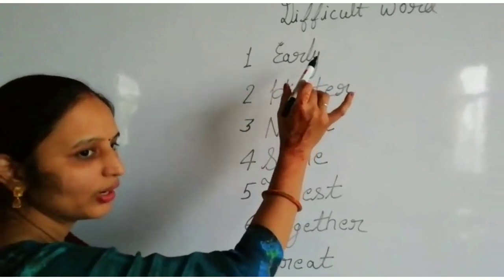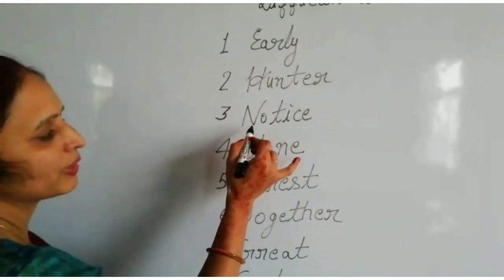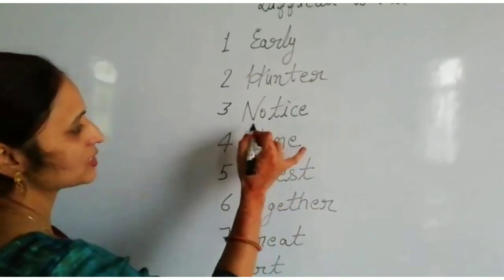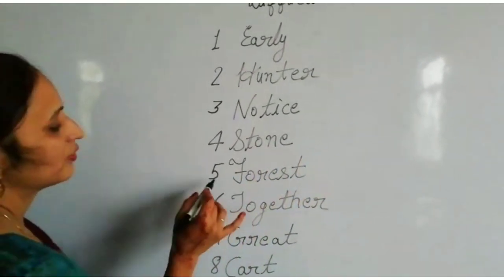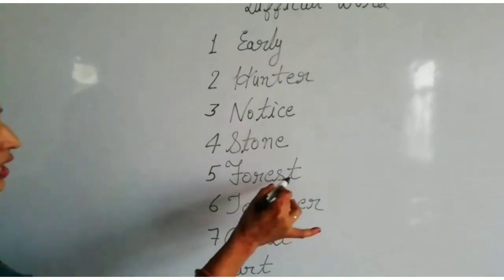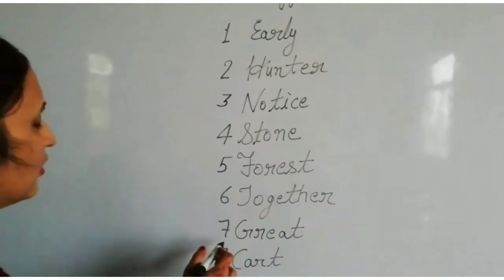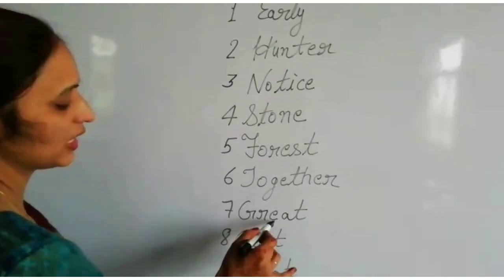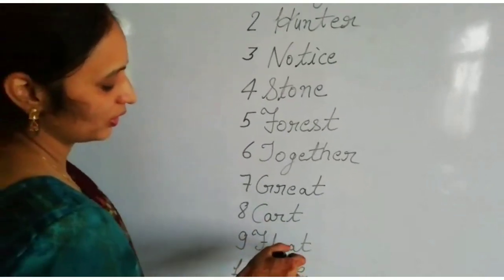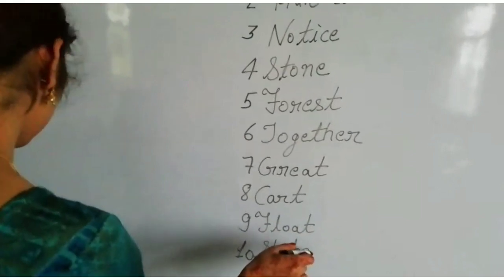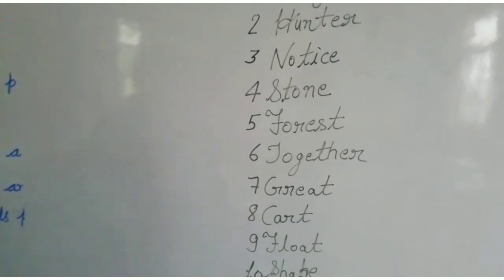Revision: Early — E-A-R-L-Y. Hunter — H-U-N-T-E-R. Notice — N-O-T-I-C-E. Stone — S-T-O-N-E. Forest — F-O-R-E-S-T. Together — T-O-G-E-T-H-E-R. Great — G-R-E-A-T. Cart — C-A-R-T. Float — F-L-O-A-T. Shape — S-H-A-P-E. I hope you understand. Also learn and write in your fair notebook. Thank you.